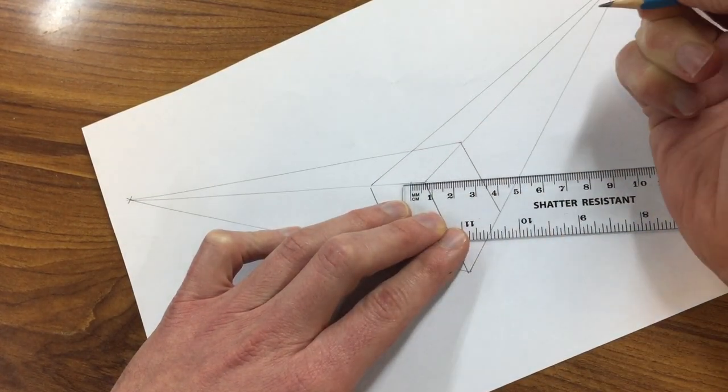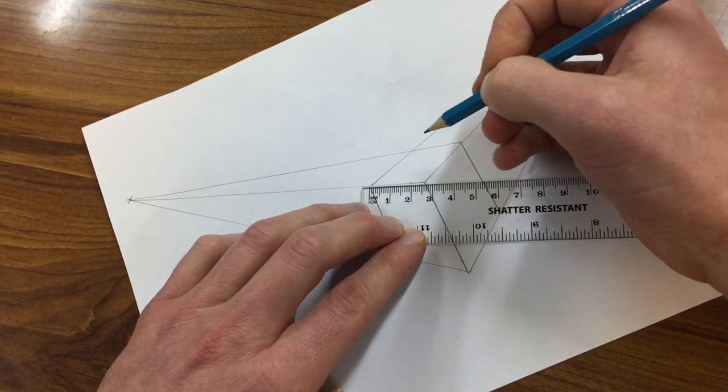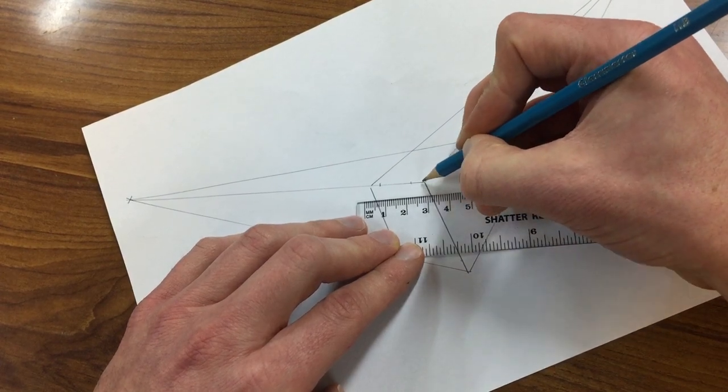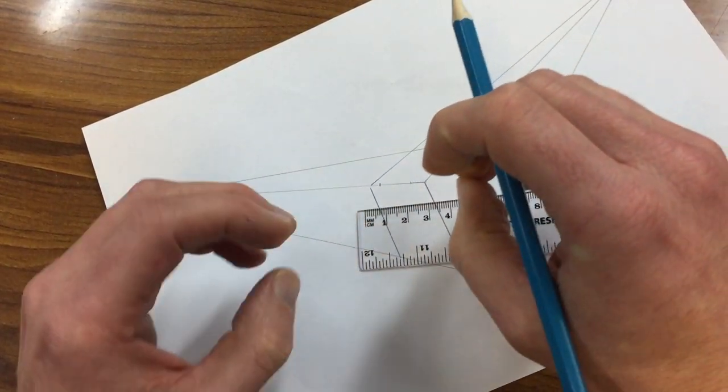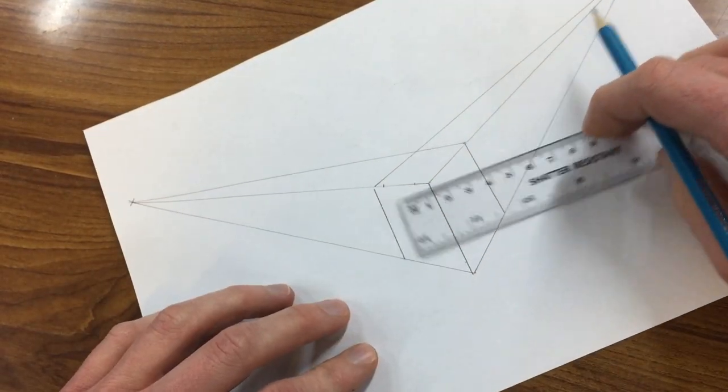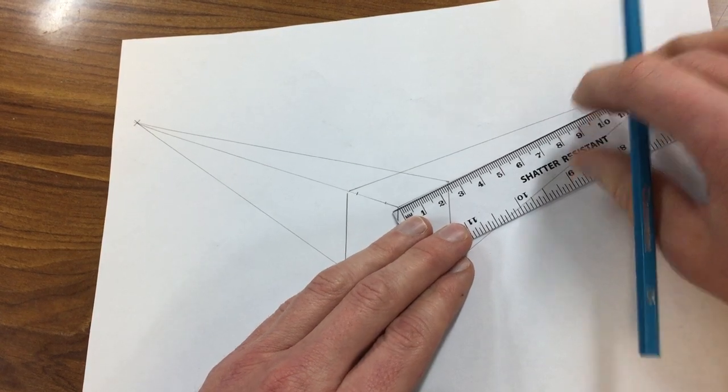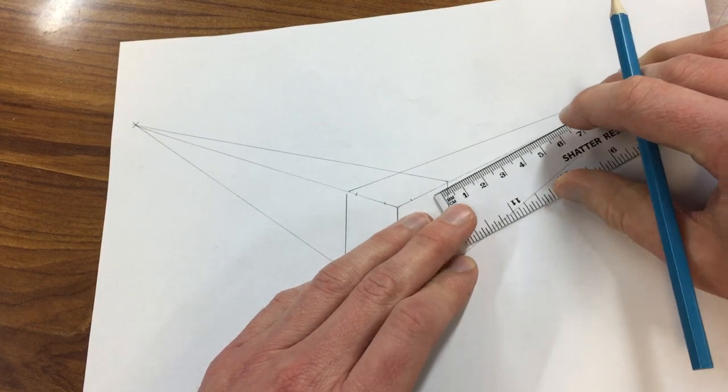And then from this end, I'm gonna set a mark about five millimeters, so that distance is slightly longer than that distance. That's because these distances are shrinking as they're getting further away. On this side, same again—I'll do a distance of about six or seven millimeters there, and then from that end about five millimeters.